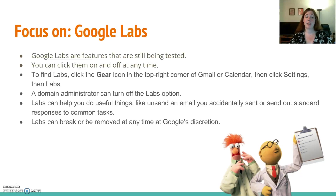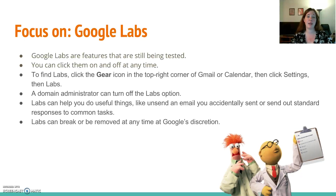To find Labs, click the gear icon in the top right corner of either Mail or Calendar. Click Settings, then click Labs. You'll be presented with a list of all kinds of options that you can turn on and off.